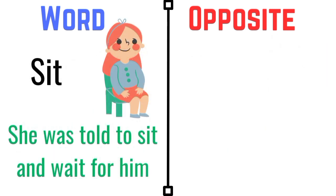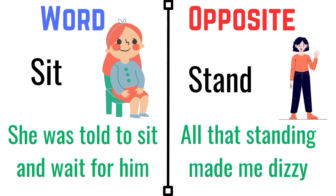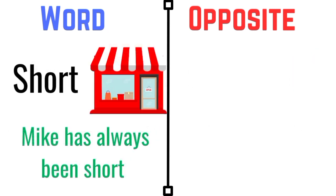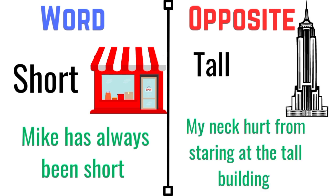Sit. She was told to sit and wait for him. The opposite of sit is stand. All that standing made me dizzy. Short. My life has always been short. The opposite of short is tall. My neck hurt from staring at the tall building.